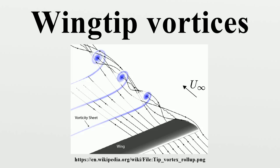Another method of reducing induced drag is the use of winglets, as seen on most modern airliners. Winglets increase the effective aspect ratio of the wing, changing the pattern and magnitude of the vorticity in the vortex pattern. A reduction is achieved in the kinetic energy in the circular airflow, which reduces the amount of fuel expended to perform work upon the spinning air.